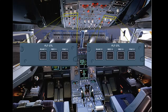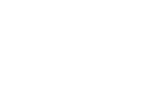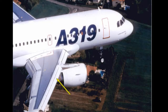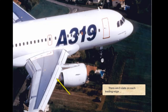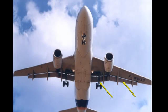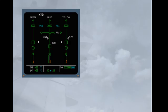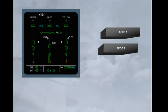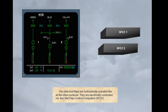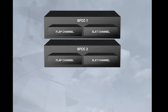Now we will introduce the lift augmentation devices. There are five slats on each leading edge and two flaps on each trailing edge. The slats and flaps are hydraulically actuated like all the other surfaces. They are electrically controlled via two slat flap control computers (SFCC). Each SFCC has two channels, one for the flaps and one for the slats. Each channel can drive its associated surfaces.